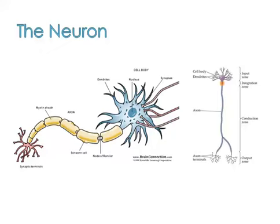Then we have the axon terminals — the very end of the neuron. Represented as synaptic terminals on the figure, these axon terminals are branching out as collateral branches of the axon, and they spread out because they are ultimately going to be connected to something else — other neurons, the dendrites of other neurons, or, if we're talking about a motor neuron, directly innervating particular muscle fibers for that motor unit. This area, the synaptic or axon terminal, is the output zone because information is being transmitted out from that neuron.